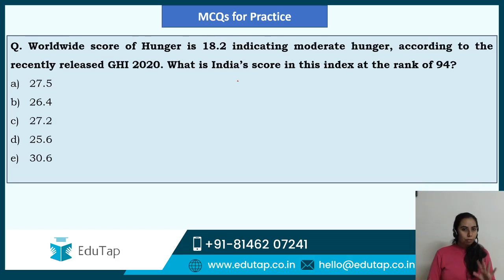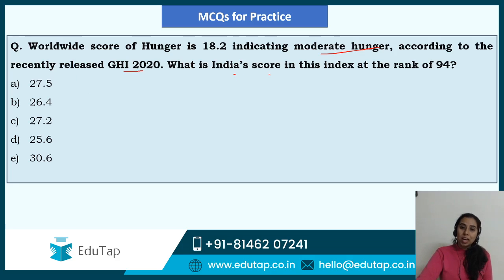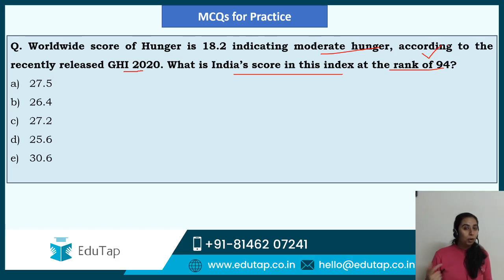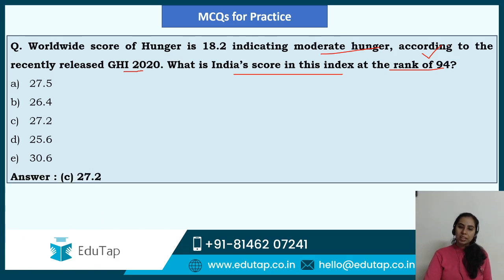My last question for practice: the worldwide score of hunger is 18.2 indicating moderate hunger across the globe. According to the recently released GHI 2020, what is India's score in this index at the rank of 94? Options: 27.5, 26.4, 27.2, 25.6, or 30.6. India is in the serious category of 31 nations facing severe hunger. India's score is 27.2, so the answer is option C.